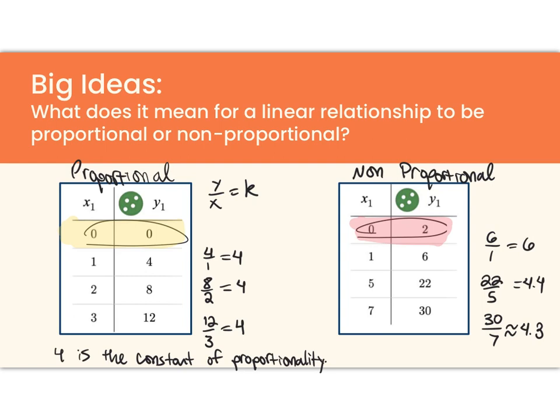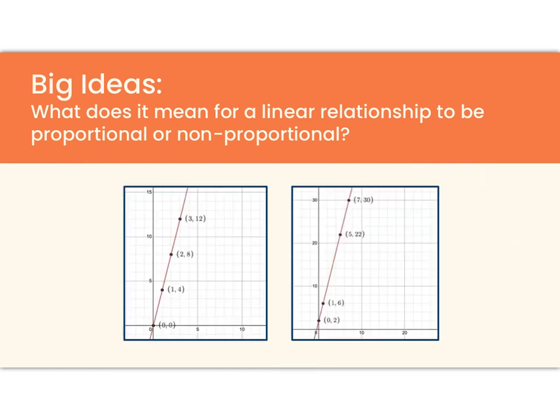And it'll make sense why that's the case when we think about proportional relationship graphs. So here are the values in those tables graphed. And check it out. Here's the point 0, 0. That's the origin. So the graph of my proportional relationship goes through the origin. The graph of my non-proportional relationship does not go through the origin. So since it does not go through the origin, that's another way that I can tell that it is non-proportional.